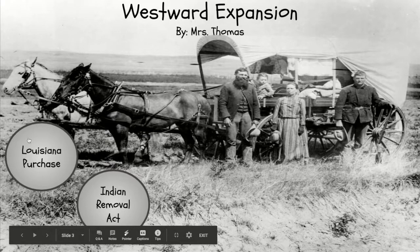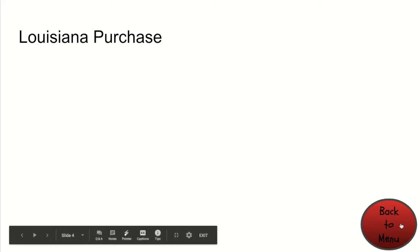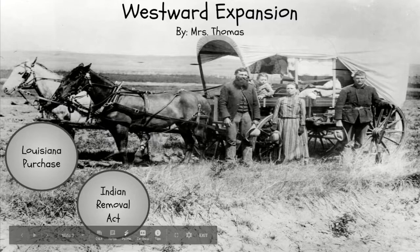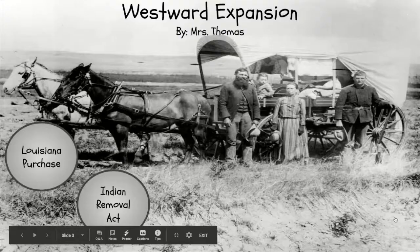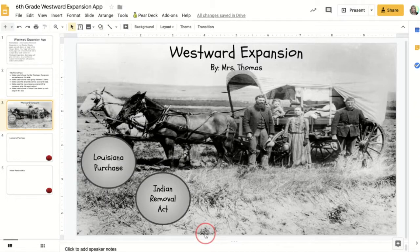Here is the front page of my app. I'm going to click Louisiana Purchase — and it takes me to the Louisiana Purchase page. Let's go back to the menu and try the next one — it took me back to the menu. Indian Removal Act — and it took me to the Indian Removal Act. Back to the menu — and it looks like everything works. That's how we use Google Slides to make an app about whatever kind of content we want to talk about.